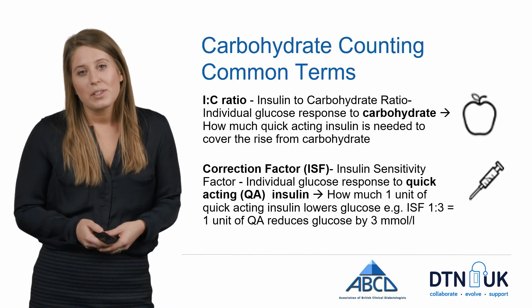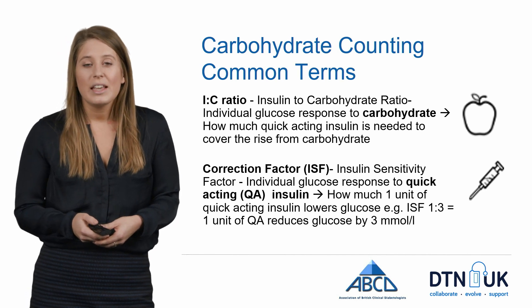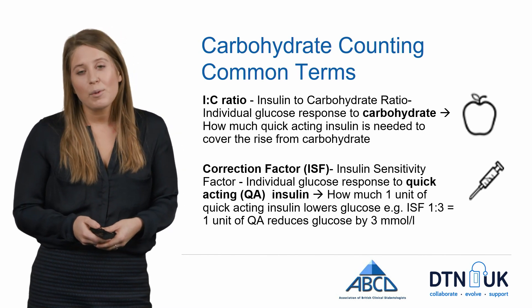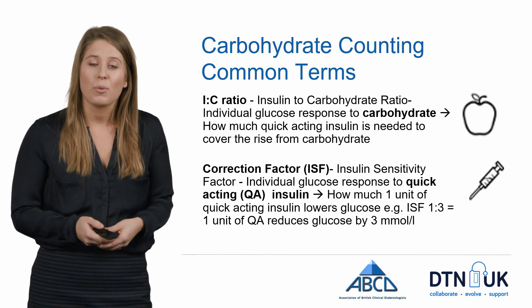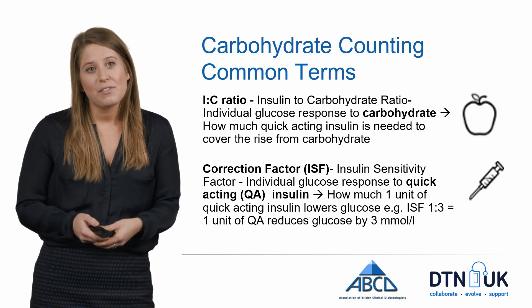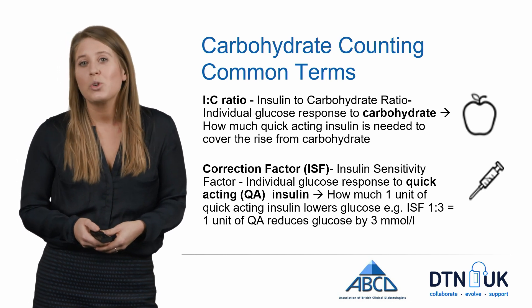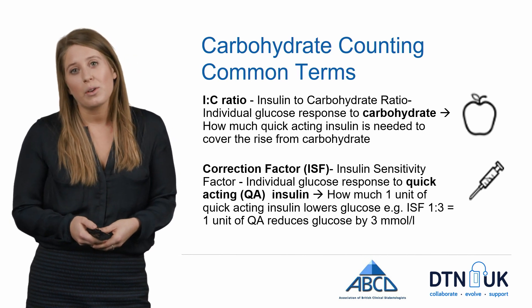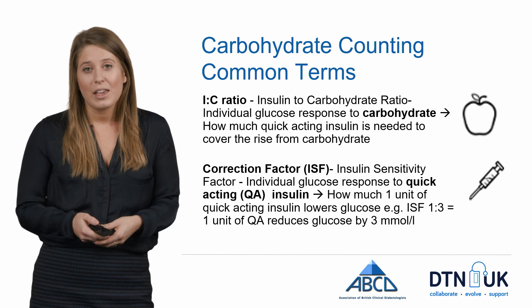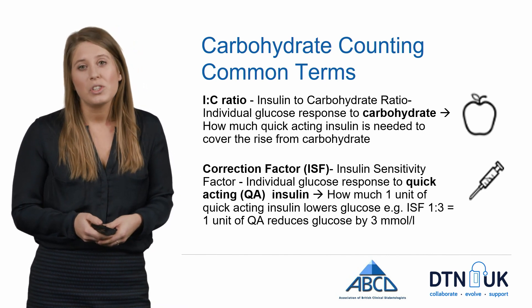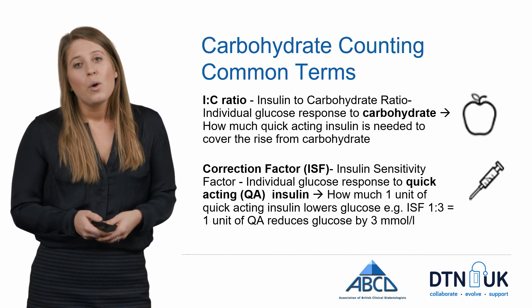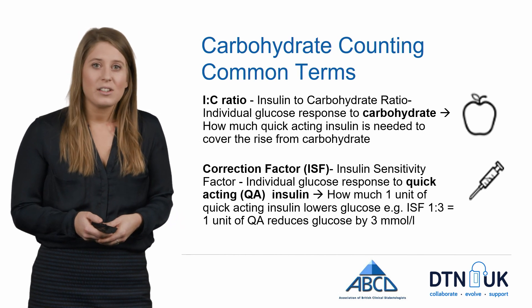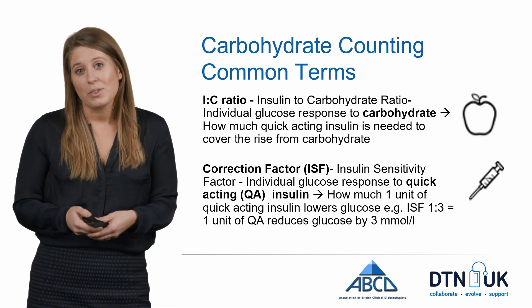The insulin to carbohydrate ratio is the individual glucose response to carbohydrates — how much quick-acting insulin is needed to cover the rise from carbohydrates. The insulin sensitivity factor or correction factor is the individual glucose response to quick-acting insulin: how much one unit of quick-acting insulin will lower the glucose by. For example, an ISF of 1:3 means one unit of quick-acting insulin will reduce glucose by 3 mmol/L. These are described as individual responses because everybody's digestive system and response to insulin is different.